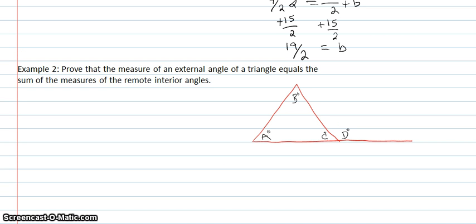The second example says to prove that the measure of an external angle of a triangle equals the sum of the measures of the remote interior angles. So, we need to prove that angle d would equal the sum of a plus b.